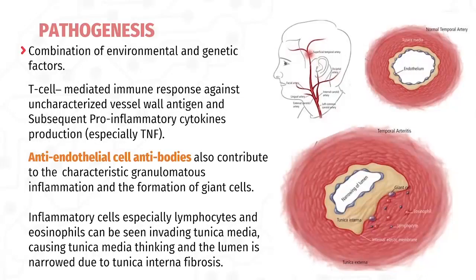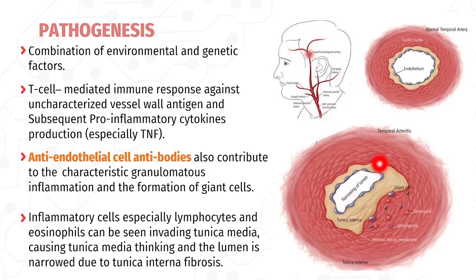The pathogenesis of giant cell arteritis (GCA) is likely a combination of environmental and genetic factors. GCA likely occurs as a result of a T-cell mediated immune response against uncharacterized vessel wall antigens and subsequent pro-inflammatory cytokine production, especially tumor necrosis factor. Anti-endothelial cell antibodies also contribute to the characteristic granulomatous inflammation and formation of giant cells. Inflammatory cells, especially lymphocytes and eosinophils, invade the tunica media, causing tunica media thickening and luminal narrowing due to tunica intima fibrosis.